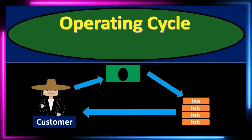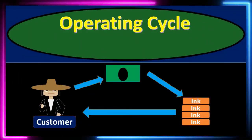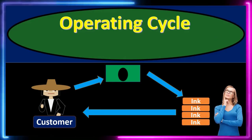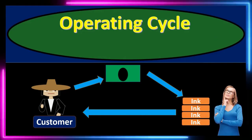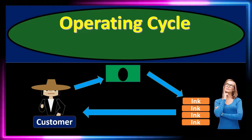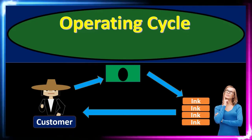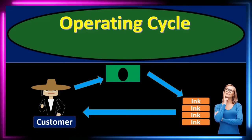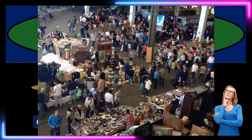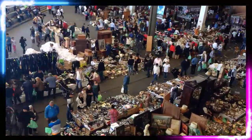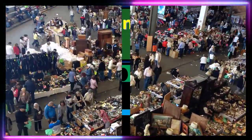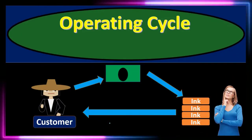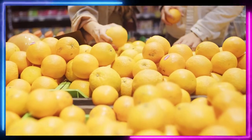In this presentation we're going to talk about the operating cycle for a merchandising company. We can contrast this to a service company — a service company provides a service to generate revenue, while a merchandising company provides merchandise. That merchandise is an added factor, adding a bit more complexity to the cycle, and is of course what we want to concentrate on as the new thing we need to get practice with.